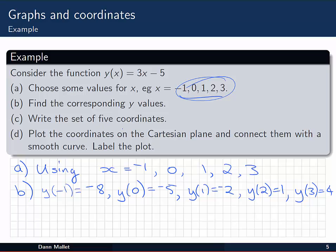Next we're going to write the 5 coordinates, the set of 5 coordinates. That's pretty much just pulling out the x and y values from here. So the first one is (-1, -8). Then we have (0, -5), (1, -2), (2, 1), and finally (3, 4).